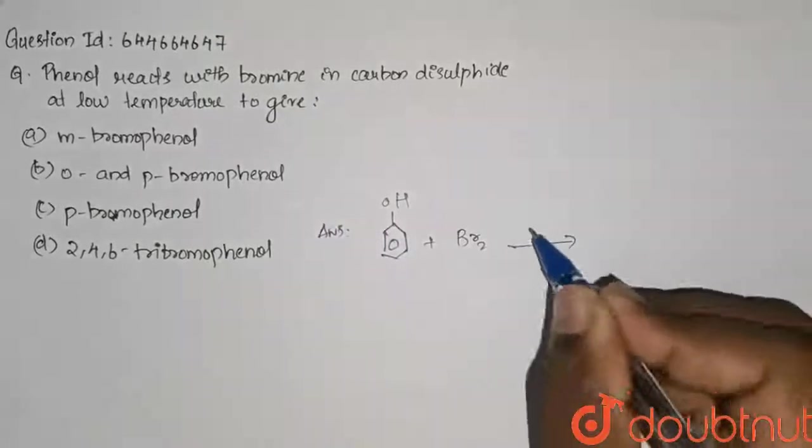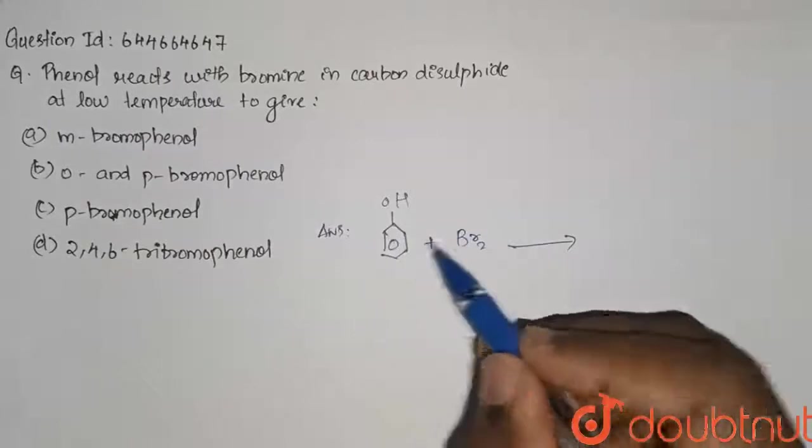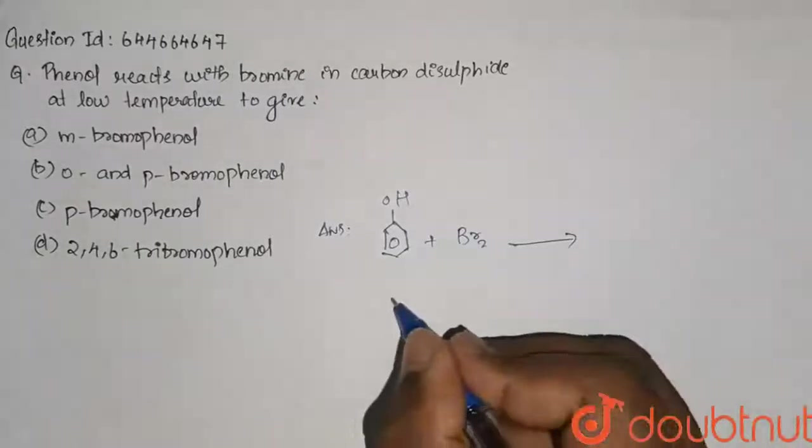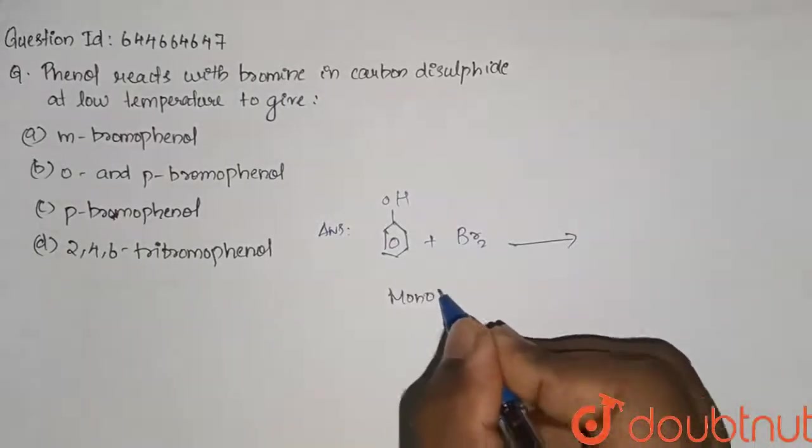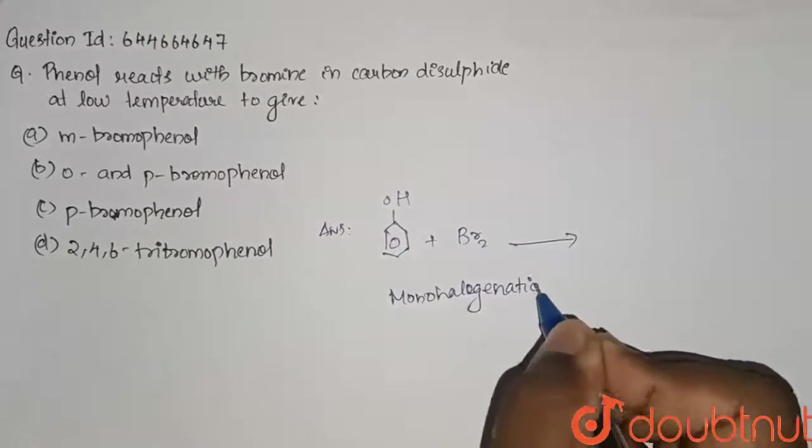if it is in the presence of water, we can directly say that a Br will be in all the positions, but here it's CS2. So, when it is CS2, here what happens is mono halogenation of phenol happens.